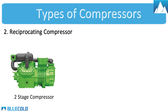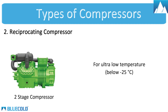Two Stage Reciprocating Compressor. Their working principle is similar to a single stage compressor. The only difference is it will operate at two different speeds, which more closely matches the output to the extra cooling required. These compressors are used for ultra-low temperatures, usually below minus 25 degrees Celsius room temperature.